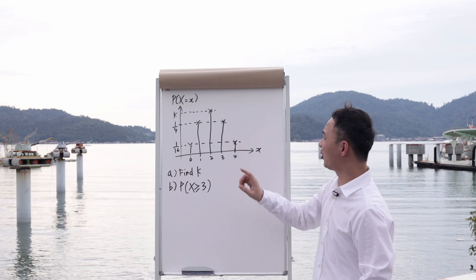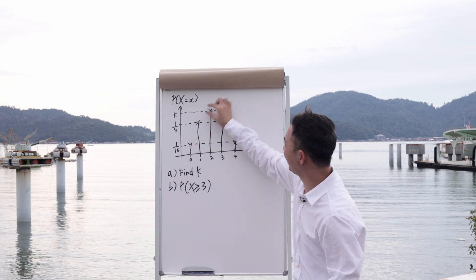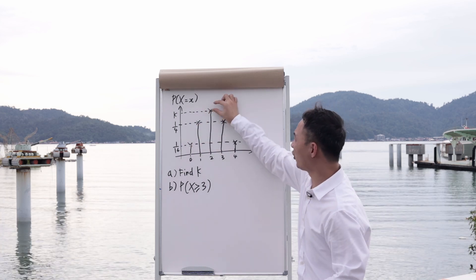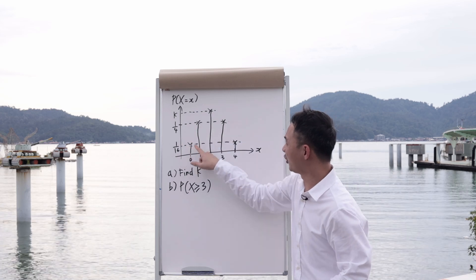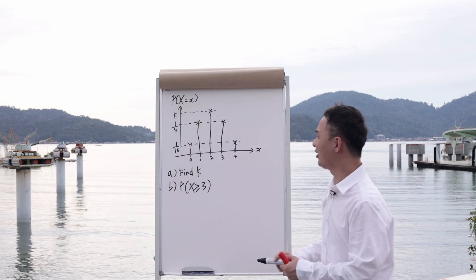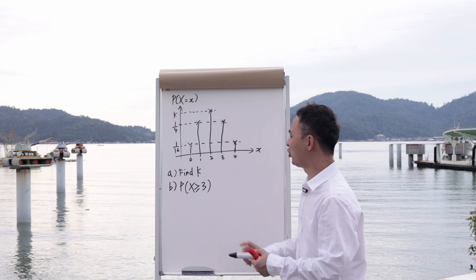So over here, very important concept is you have all the coordinates here, and then you should know all these coordinates add together must equal to one. And each of the coordinates here, you can see the probability. So I can easily find k by using that concept.